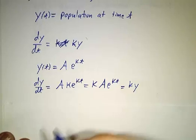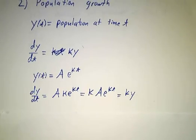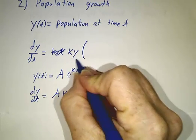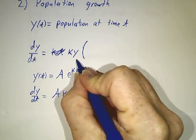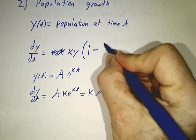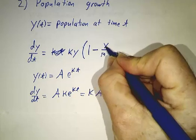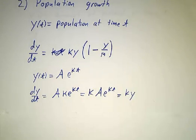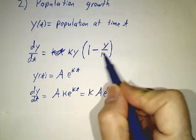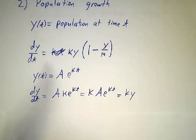Now, as before, you might have a different model of population growth. You might say, yeah, you know, this is fine when the population is small, but eventually it's going to get really crowded. So here is a different model of population growth. This is called the logistic equation. It says that as the population approaches the value m, called the carrying capacity, the growth slows down.